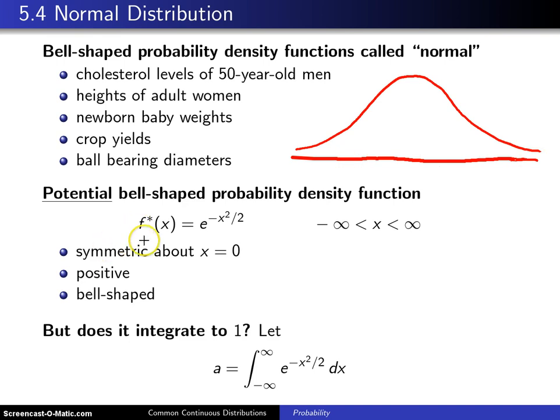So here are three things about this potential probability density function. First, f*(x) is an even function, and because it's an even function we know this will be symmetric about x equals zero. Second, like all probability density functions, it has to be positive. E raised to any power is a positive number, so we have that. And third, this is bell-shaped.